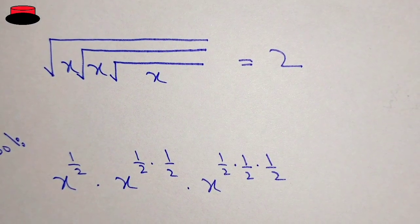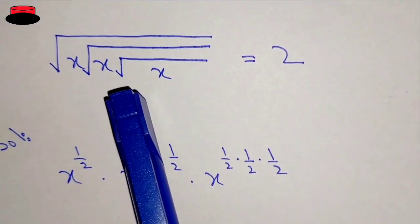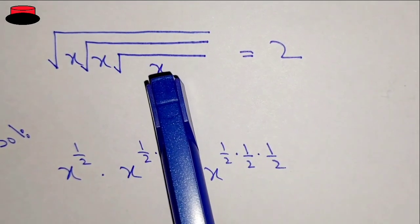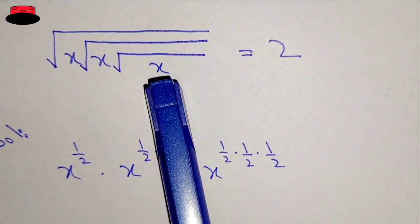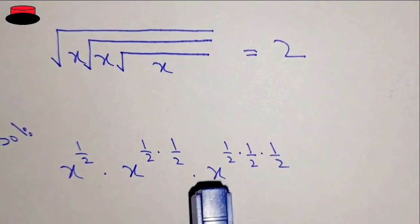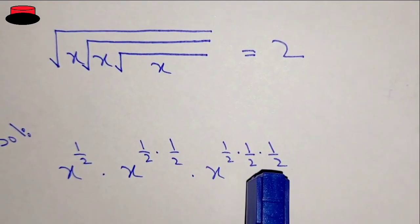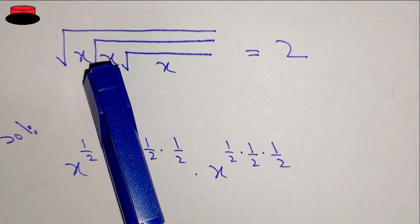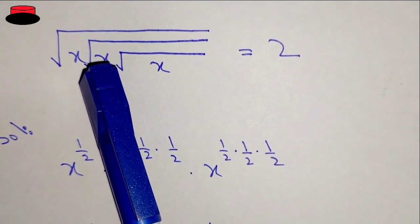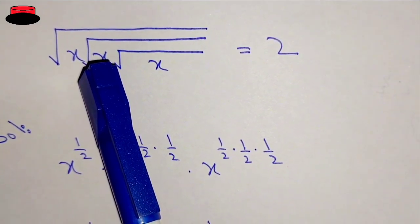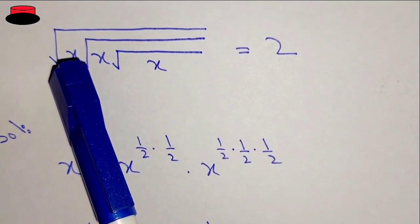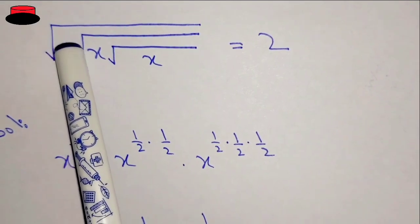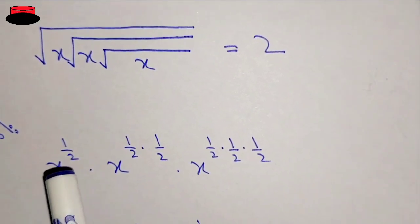Hello, welcome to the new video. Since we know that under root is equal to power one over two, this x will have three under root powers — it means one upon two into one upon two into one upon two. This x has two roots above it so it will have two one-upon-two powers, and this x will have one one-upon-two power because it has one under root above it.